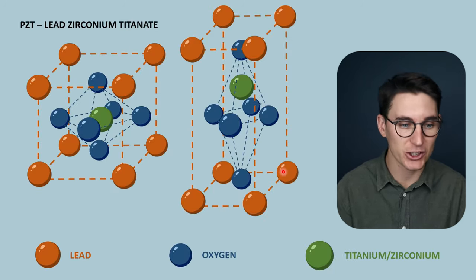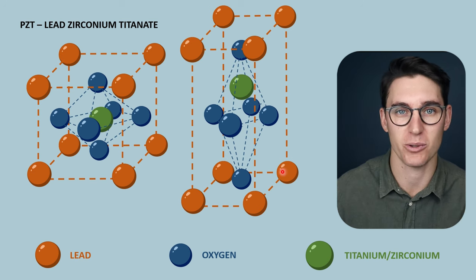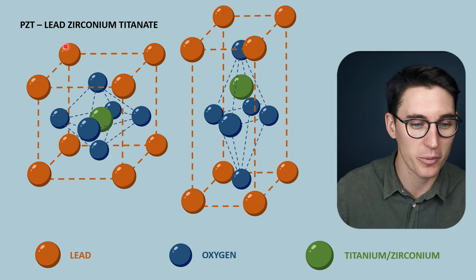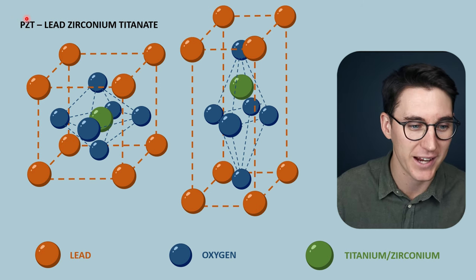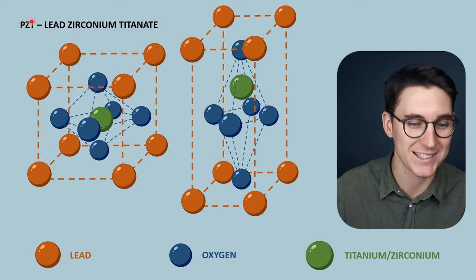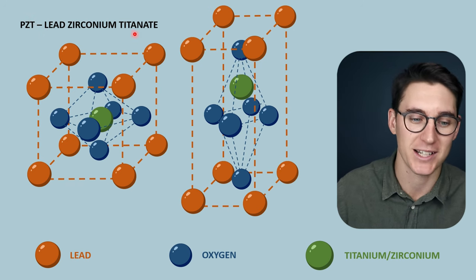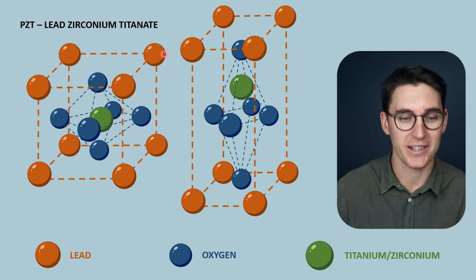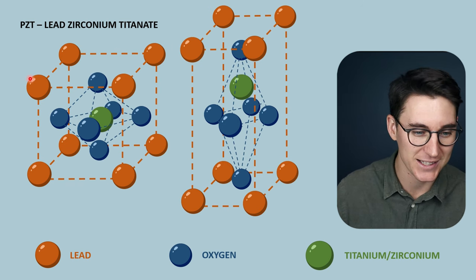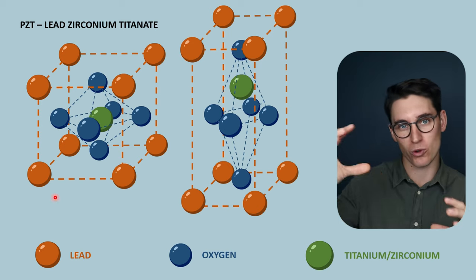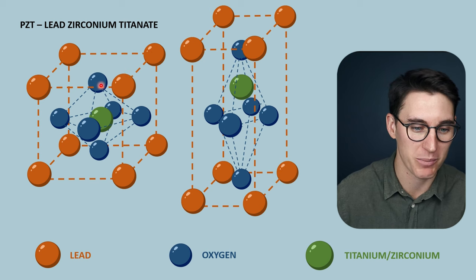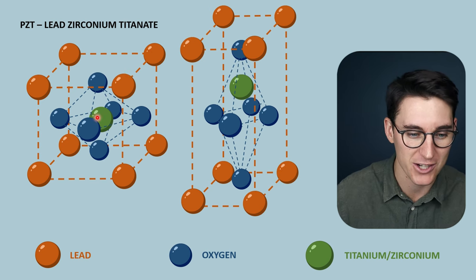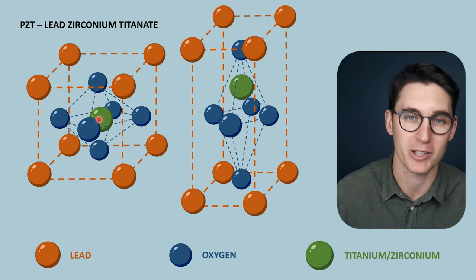Let's have a closer look at the actual chemical structure of our piezoelectric material. The most common material we use is what's known as a PZT crystal — P standing for lead, Z for zirconium, and T for titanium — a lead zirconium titanate crystal. In its basic form, a PZT crystal has outer lead atoms that form these cuboid or rhombohedral shapes, with oxygen atoms surrounding a central titanium or zirconium atom within that structure.